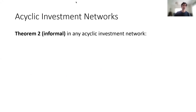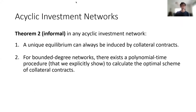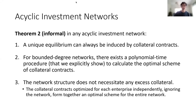For acyclic investment networks, we show three results. First, a unique equilibrium can always be induced by collateral contracts. Second, if the degree in the network is bounded — if the number of investors per enterprise is bounded — there exists a polynomial-time procedure to calculate the optimal collateral scheme. Third, the network structure does not require any excess collaterals: the collateral contracts optimized for each enterprise independently, ignoring the rest of the network, together form an optimal scheme for the entire network.